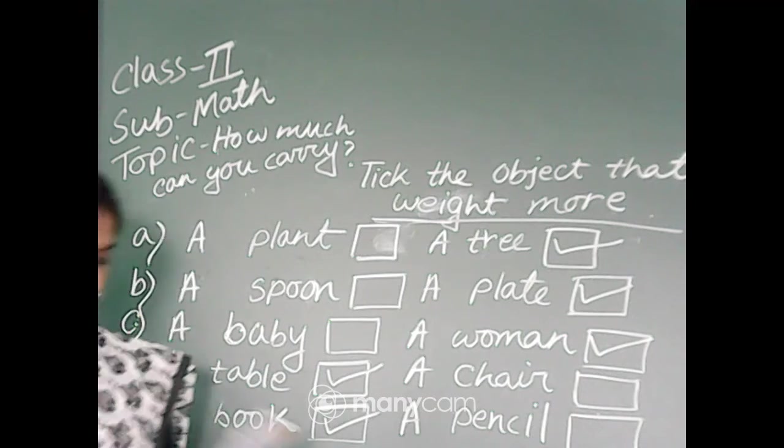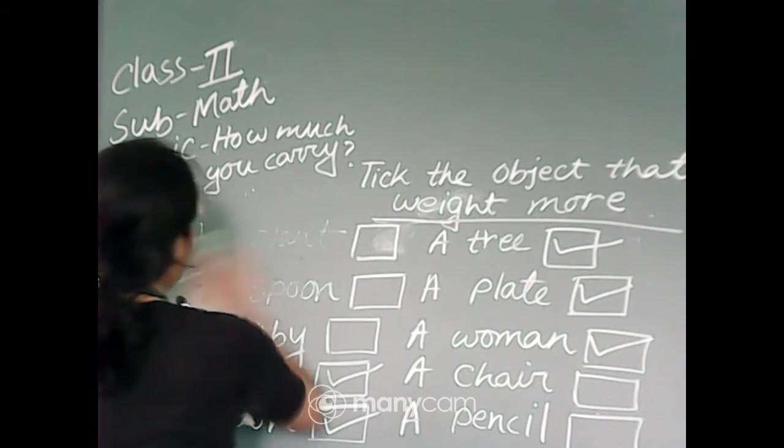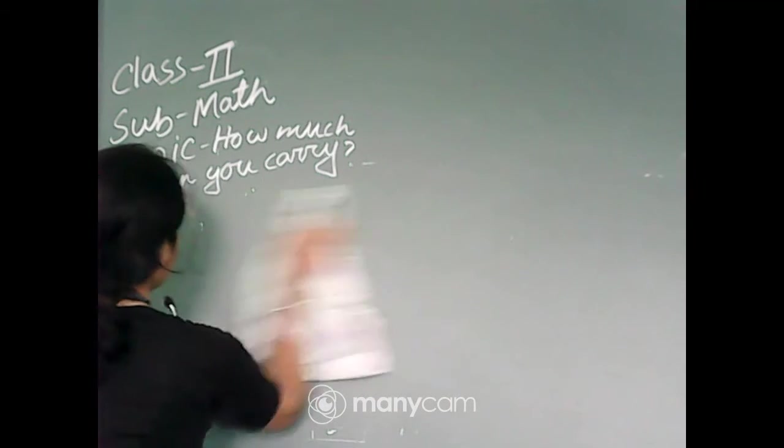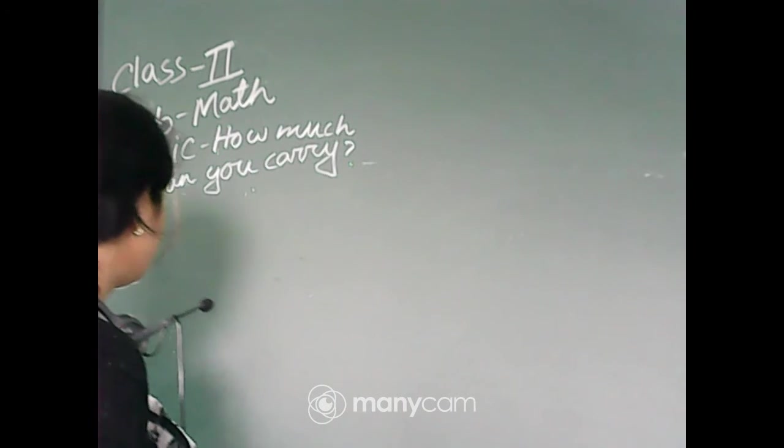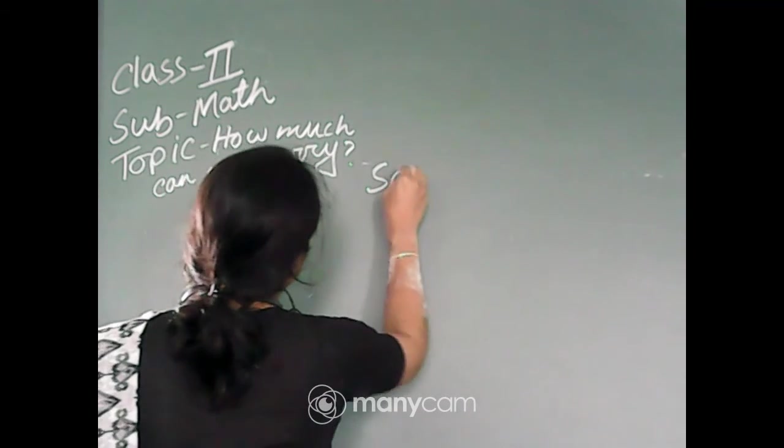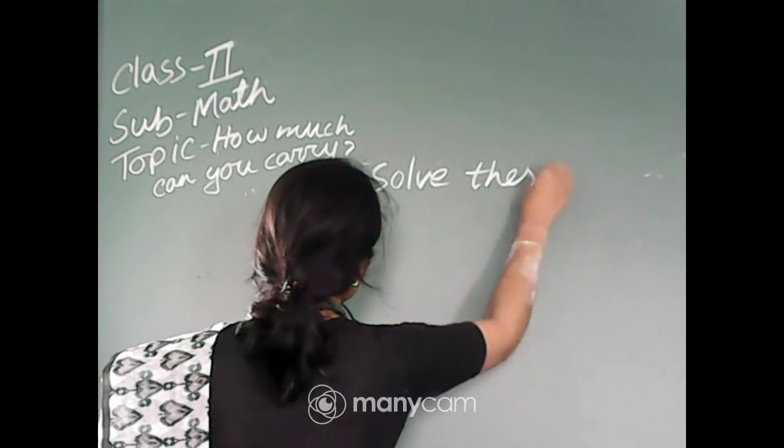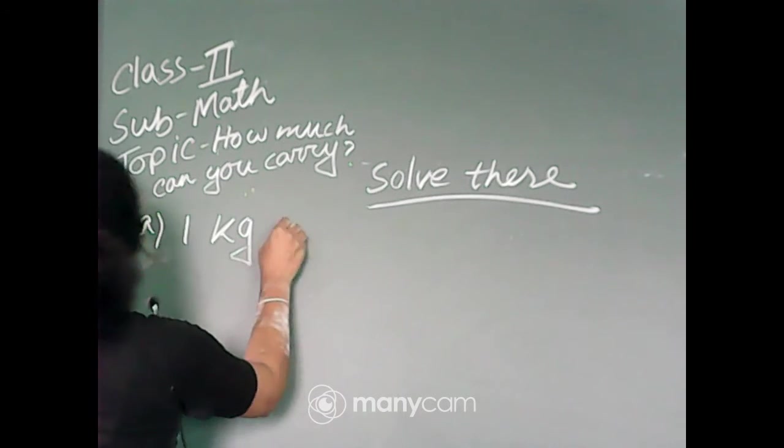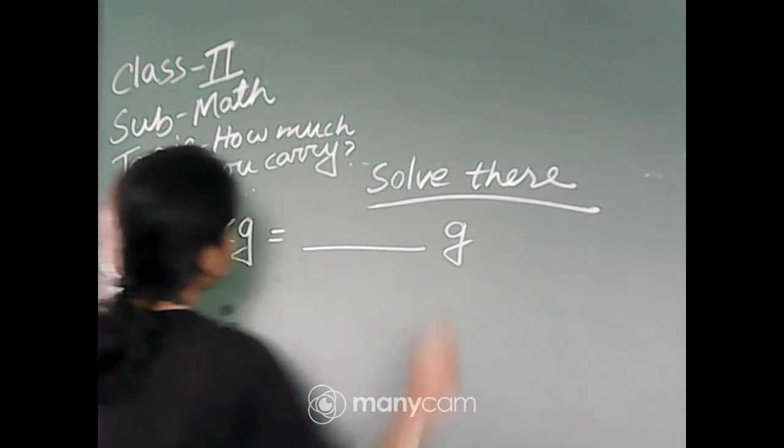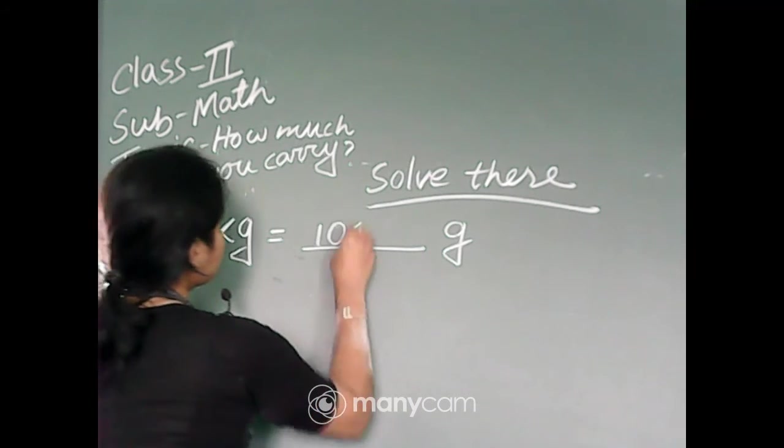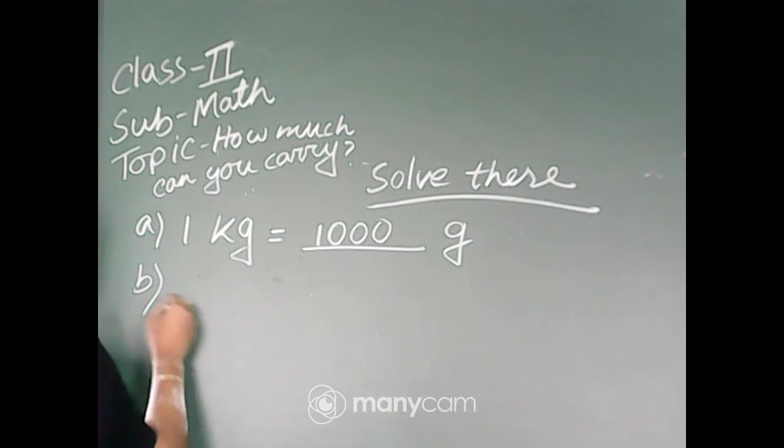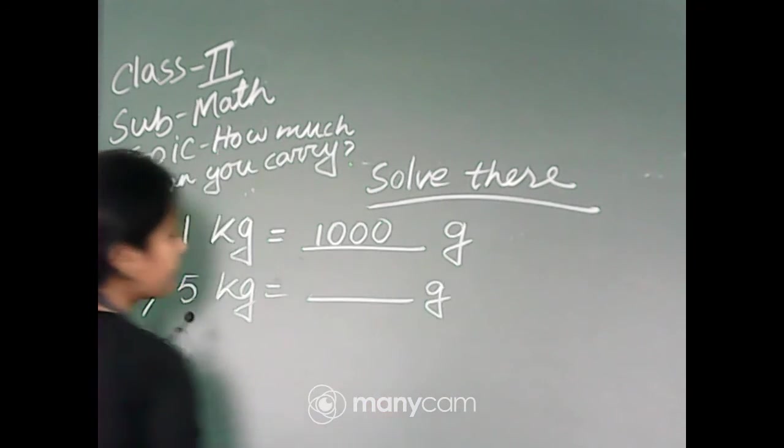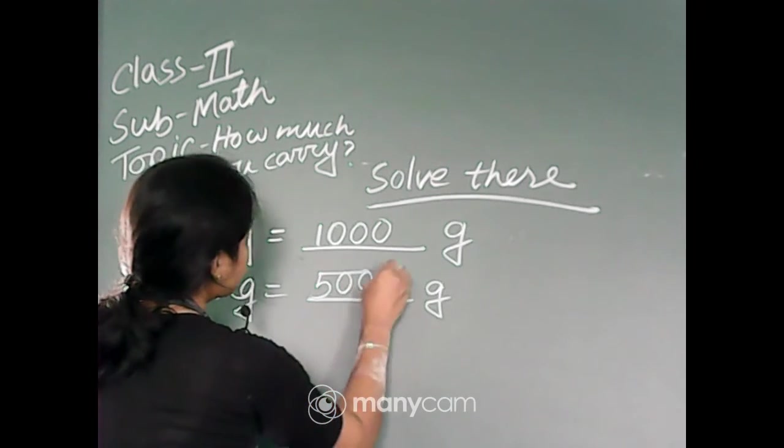I hope you have completed this part. Now, next topic: solve these. Number A: 1 kg equals dash grams. 1 kg equals 1000 grams. Next, number B: 5 kg equals dash grams. 5 kg is equal to 5000 grams.